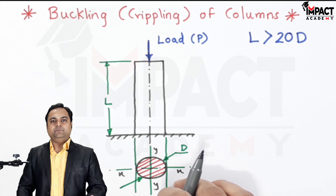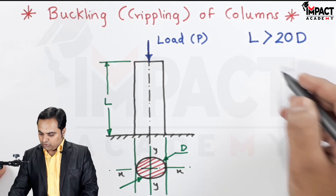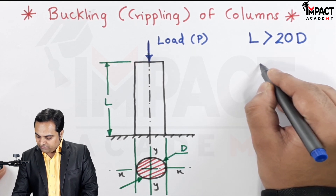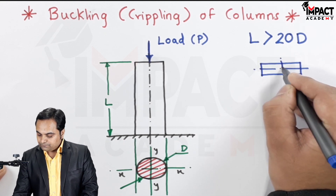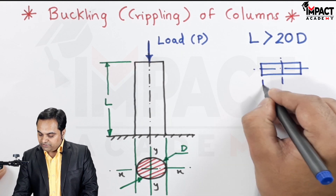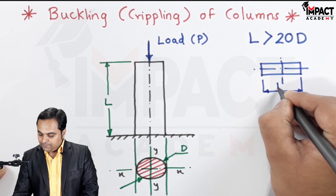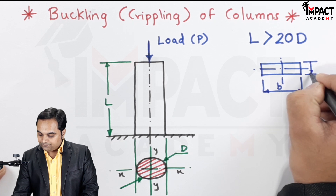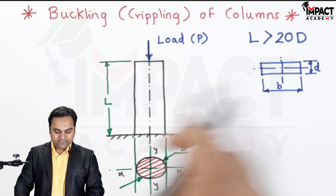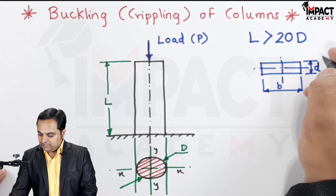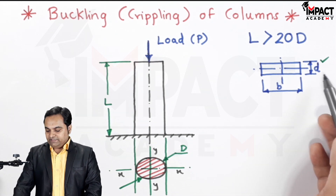For a non-circular column, we take the least lateral dimension. For example, if it is a rectangular column having width B and depth D, then out of B and D, the smaller value is the least lateral dimension. In that case it would be 20 times that least lateral dimension.